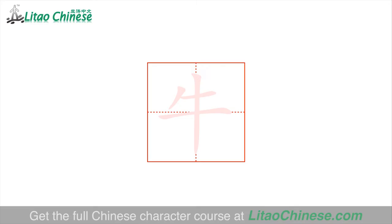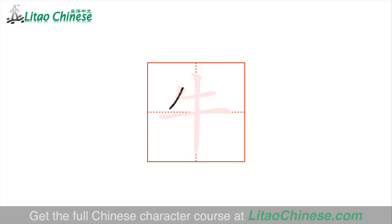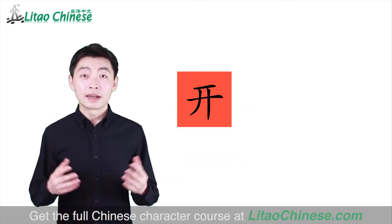Here is the correct stroke order of 牛. Write the small 撇 first, then 横, 横 — the second 横 is longer than the first one. The last stroke is 竖, and it goes across the two horizontal strokes. Four strokes in total. 牛 — cattle.